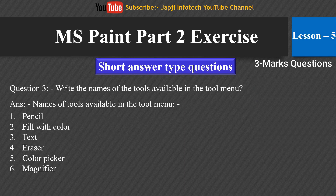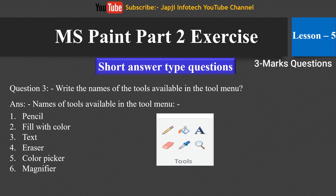The next question is: write the names of the tools available in the tools menu. The names of the tools available in the tools menu as shown in the picture are: first, pencil; second, fill with color; third, text; fourth, eraser; fifth, color picker; and sixth, magnifier.